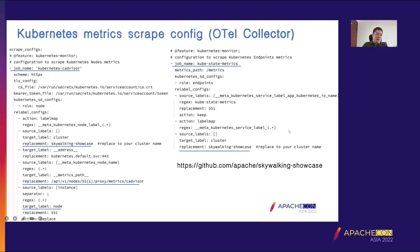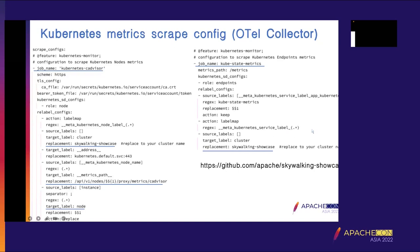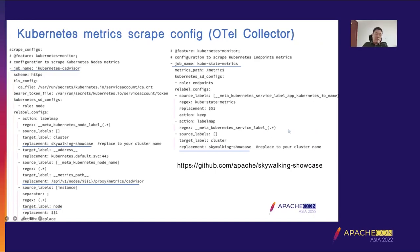These are parts of the config for the OpenTelemetry collector to scrape the metrics. The complete configs can be found in the SkyWalking showcase. Since we need two metric sources, we need to configure two scrape jobs: one for the Kubernetes cAdvisor job and another for kube-state-metrics. You should replace the cluster name with your own.